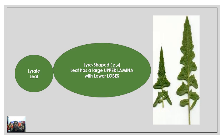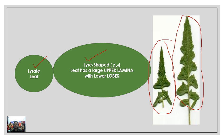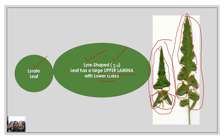This leaf is called lyrate — like a lyre, a historical musical instrument you have seen in stories and pictures. This leaf has a longer upper lamina, and at the lower side it produces lobes. As you go to the upper side it becomes tapered and pointed — this is called a lyrate leaf.